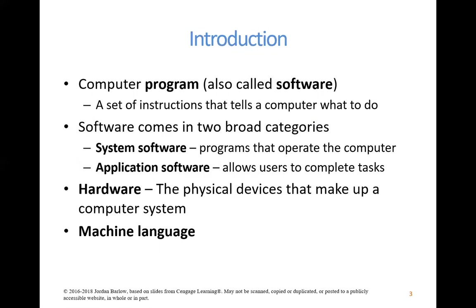Starting at the very beginning: a computer program, which is also called software, is essentially a set of instructions that tells a computer what to do. So when you are writing programming code, you are writing instructions for the computer. Software comes in two broad categories: system and application software.